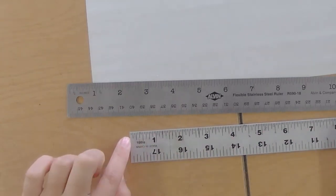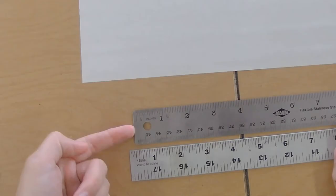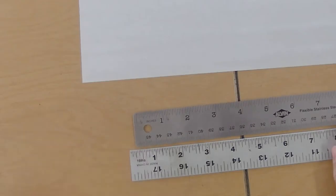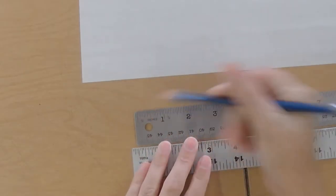However, this ruler, notice that the end right here doesn't start at zero. Zero is right here. It's this little skinny line right here.